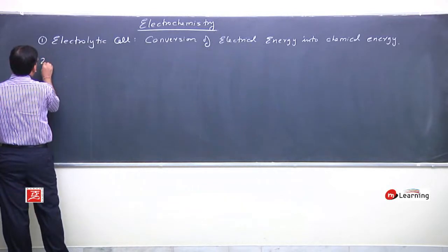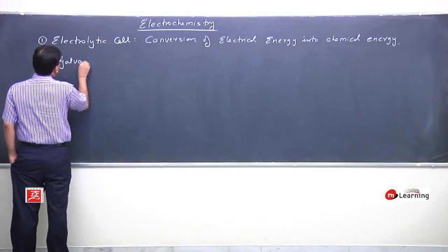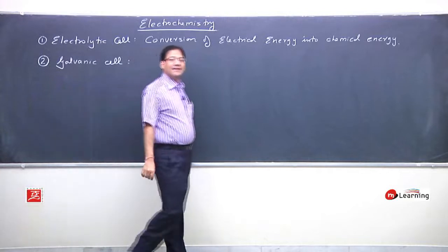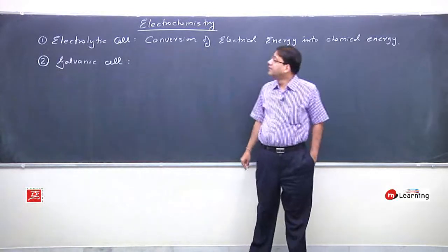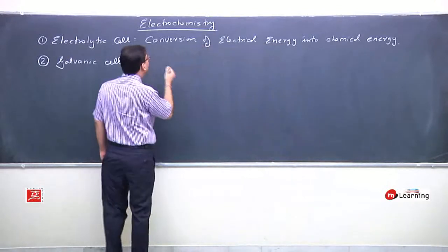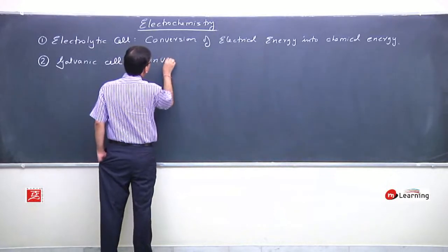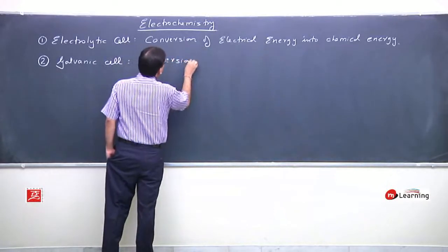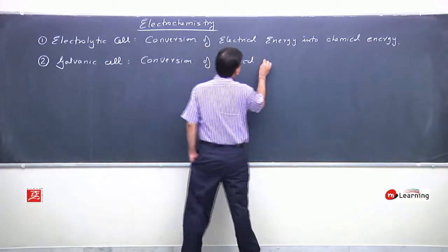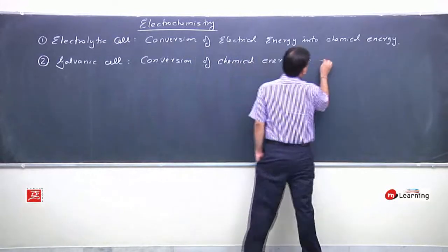The second part of the chapter is the galvanic cell — just the reverse of the electrolytic cell. Here, we will observe the conversion of chemical energy into electrical energy.